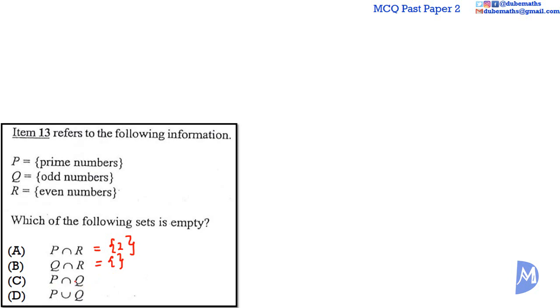For completeness, let us check C and D. Is there any prime number that is odd? Yes — all prime numbers except 2 are odd, so P intersect Q equals {3, 5, 7, ...}, not null. What about P union Q? That is the set of all prime numbers and odd numbers: {2, 3, 5, 7, ...} — definitely not null. The answer is B.